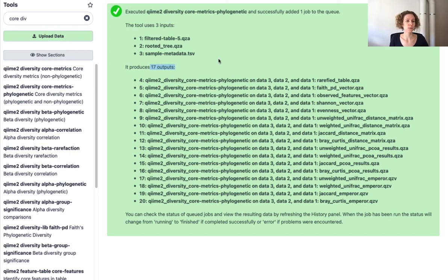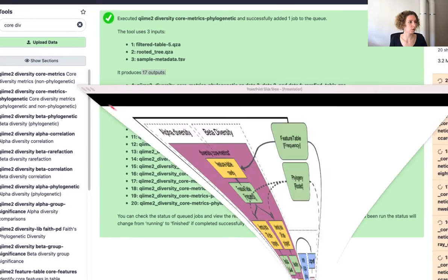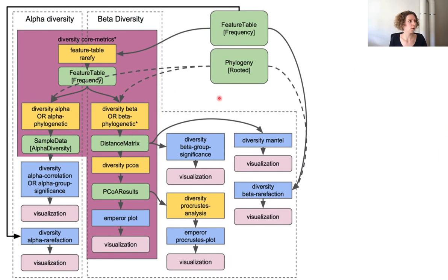So I'm just going to hit execute here and you see that this action actually produces 17 outputs and therefore it's really useful that we only specify an output directory when we're using the command line instead of having to name all of these artifacts. And while this is loading, I'm actually going to show you what is going on under the hood here.